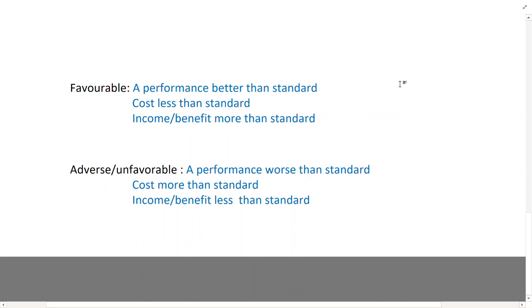A favorable variance occurs when we have incurred less cost than standard, or when we have earned more income than standard. When cost is less than standard and income is more than standard, we have a favorable variance. An adverse variance is when cost is more than standard and income is less than standard. The more the income and the less the cost, the better; the more the cost and the less the income, the worse.